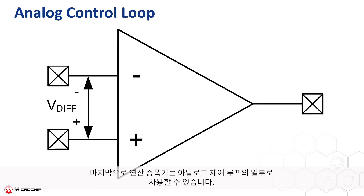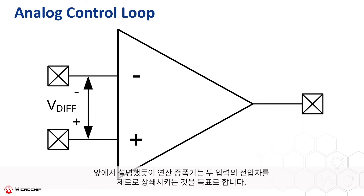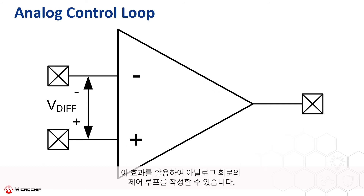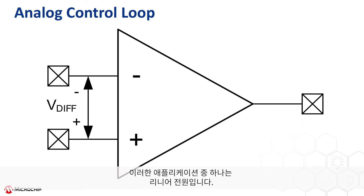Finally, the op-amp can be used as part of an analog control loop. As mentioned earlier, the op-amp tries to null its inputs to a differential voltage of zero. This effect can be utilized to create control loops for analog circuits. One such application of this is in a linear power supply.